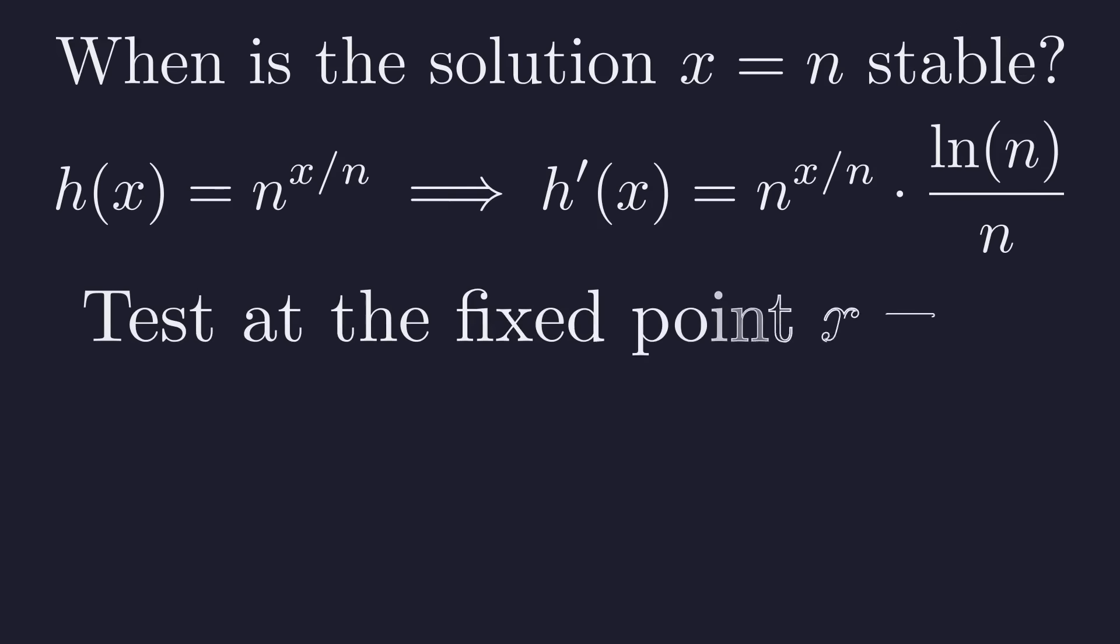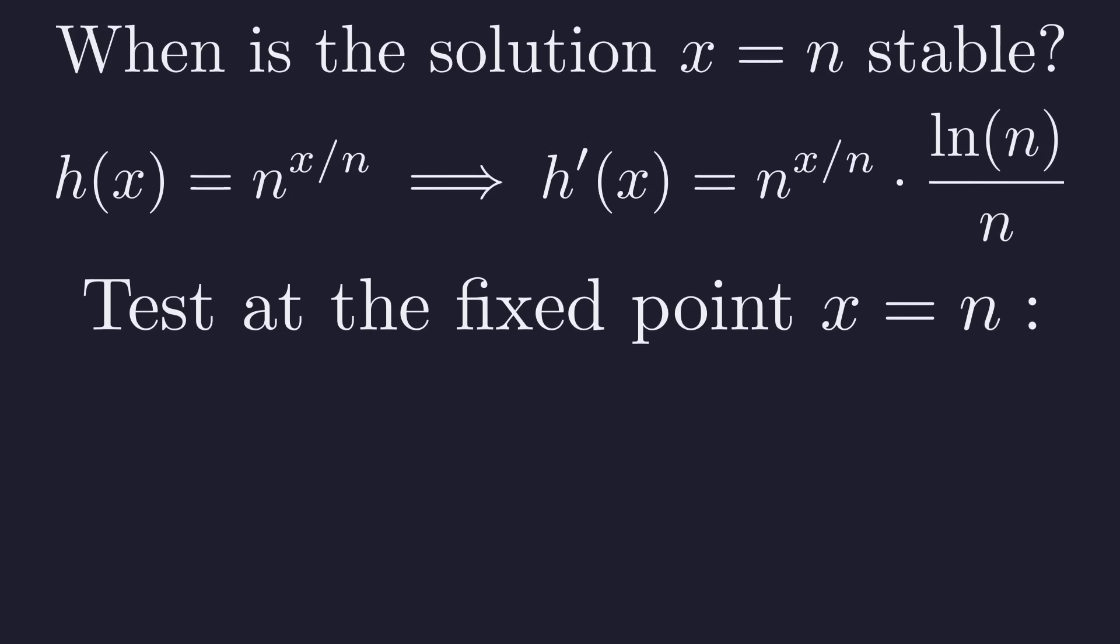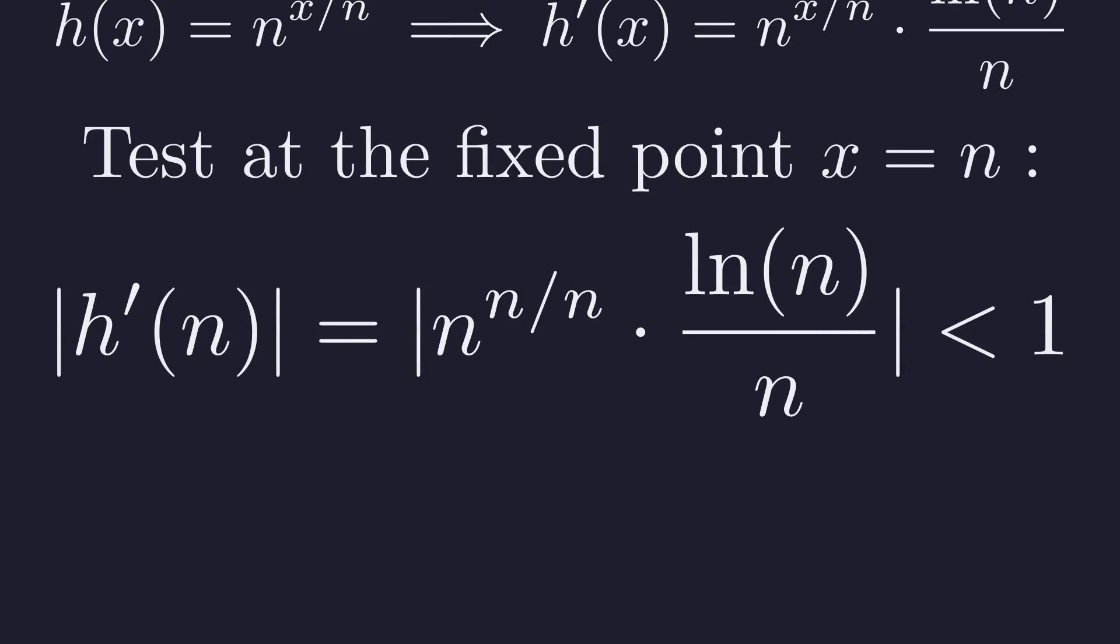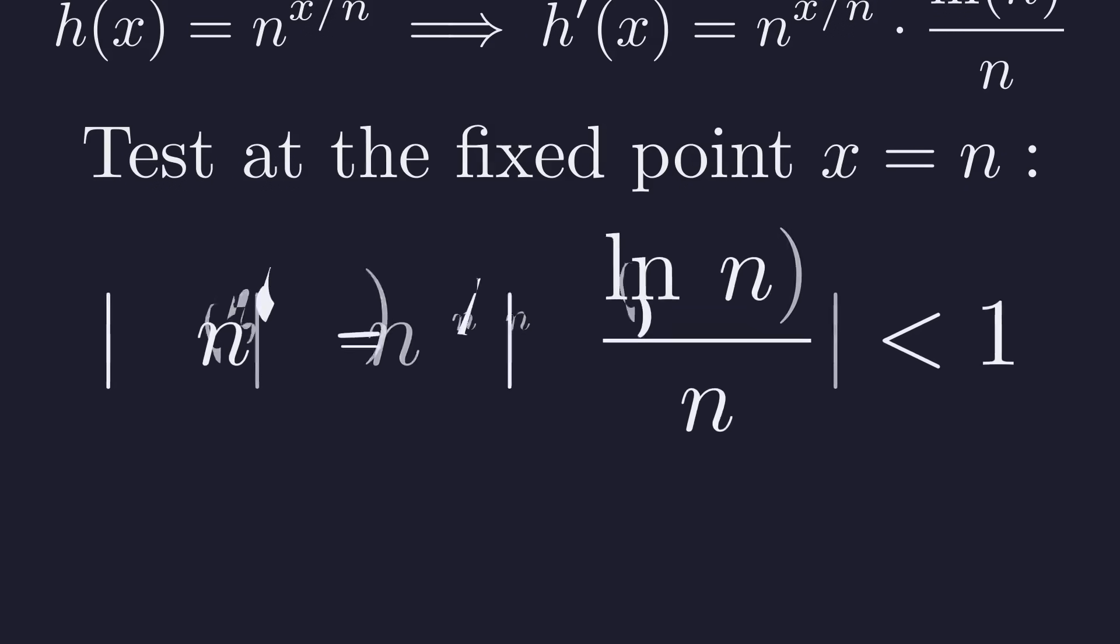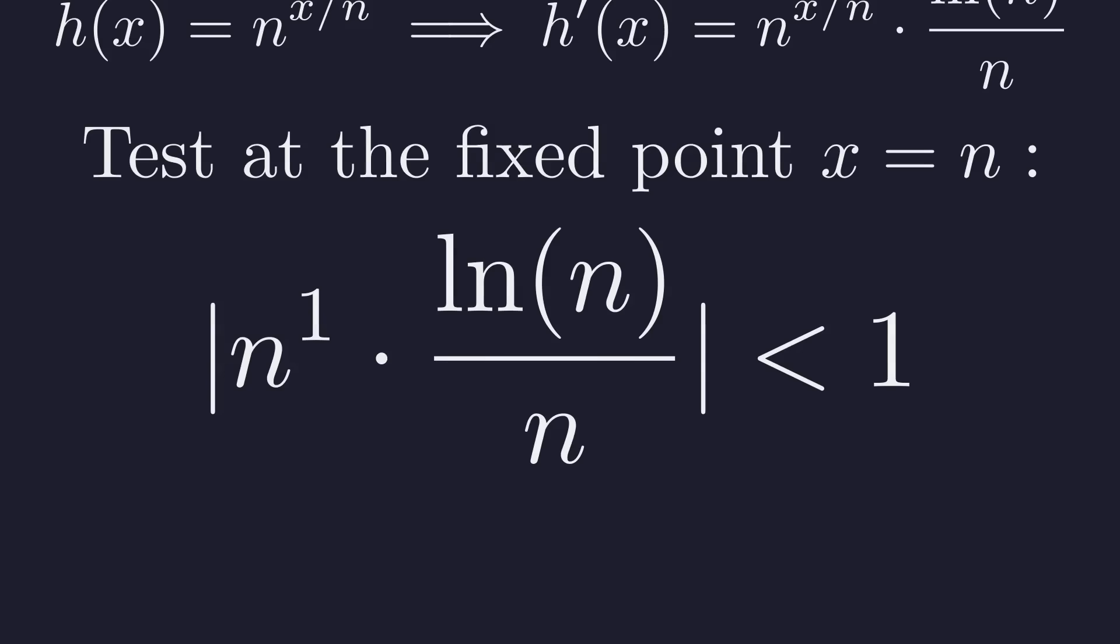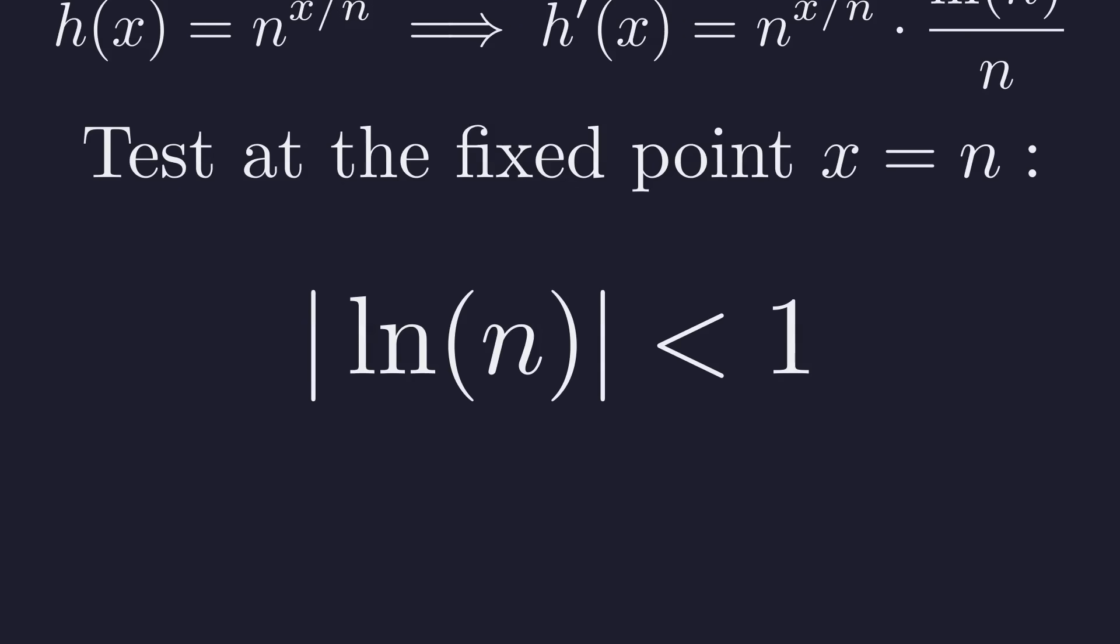We apply the stability test at our fixed point of interest, x equals n. We set up the stability condition. The absolute value of the derivative at n must be less than 1. The exponent n over n simplifies to 1. The n in the numerator cancels with the n in the denominator, leaving a beautifully simple condition.